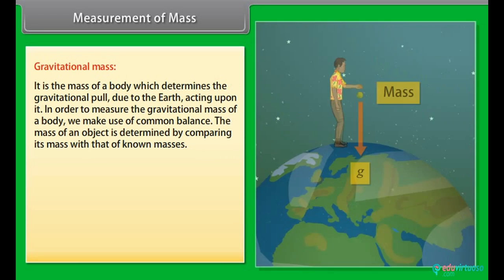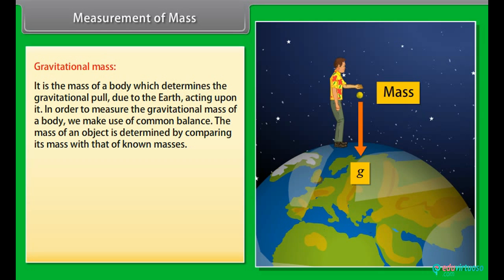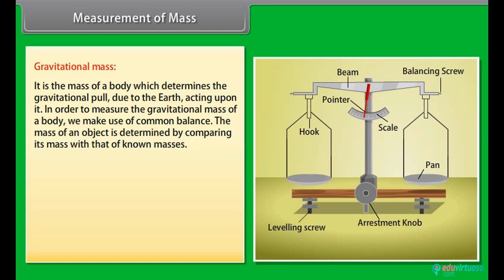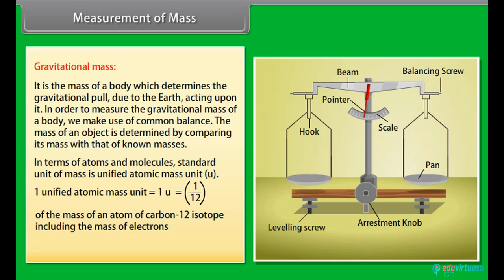Gravitational mass: it is the mass of a body which determines the gravitational pull due to the earth acting upon it. In order to measure the gravitational mass of a body, we make use of common balance. The mass of an object is determined by comparing its mass with that of known masses. In terms of atoms and molecules, the standard unit of mass is unified atomic mass unit (u). One unified atomic mass unit = 1u = 1/12 of the mass of an atom of carbon-12 isotope including the mass of electrons = 1.66 × 10^-27 kg.